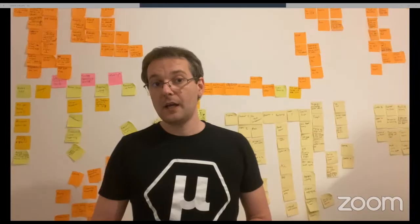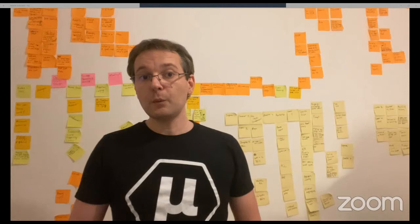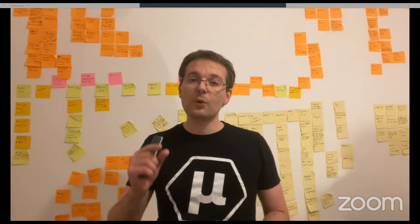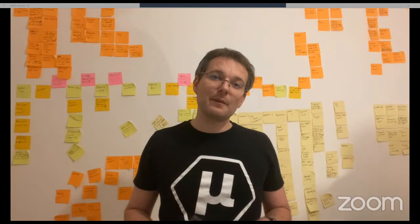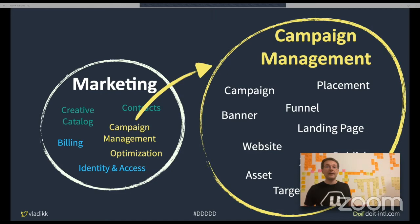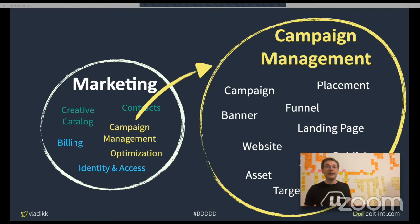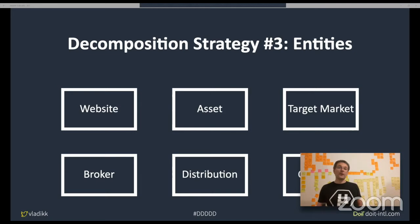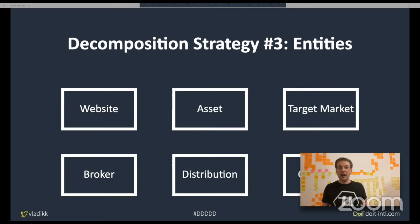When we embarked on that microservices adventure, we strived for even smaller services. We dug deeper into business subdomains and extracted their entities and processes into their own microservices. For example, in our Campaign Management subdomain we had business entities such as Campaign, Funnel, and Target Market, and we used these entities as boundaries for designing services. That was our third decomposition strategy: having each service represent one business entity or process. Initially this approach failed miserably, but it did work later in other projects — we'll discuss why soon.